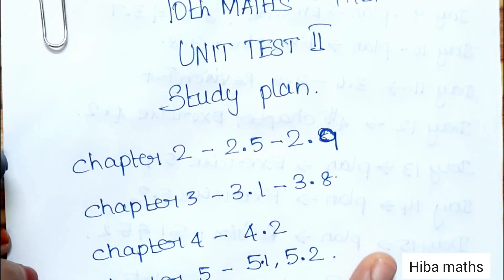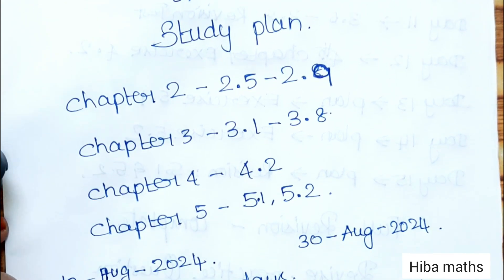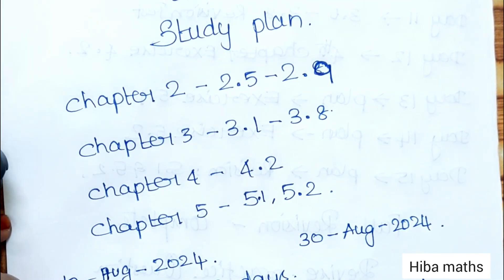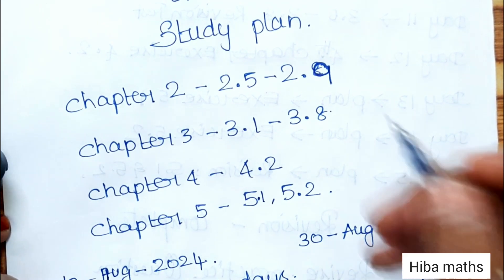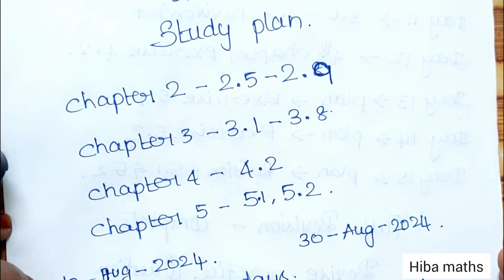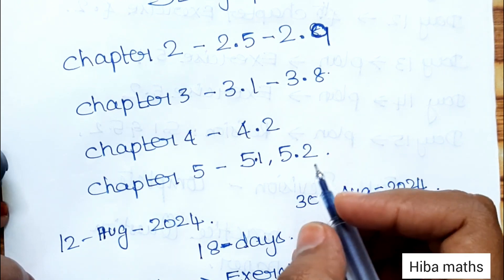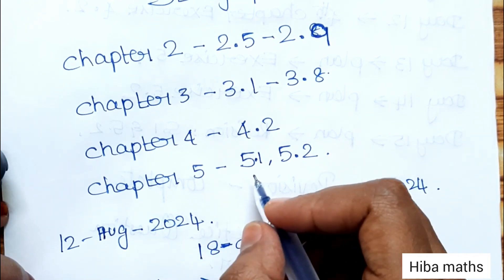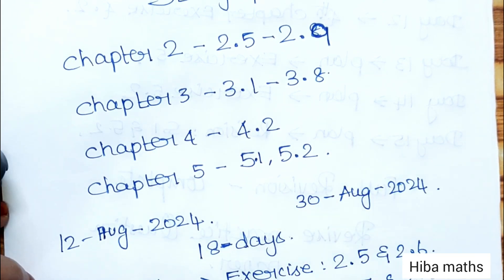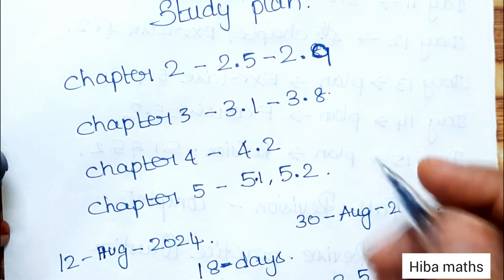The unit test timetable is published in Chennai district. We have prepared the study plan covering chapter 2: exercises 2.5 and 2.9; chapter 3: exercises 3.1 to 3.8; chapter 4: practical geometry; and chapter 5: exercises 5.1 and 5.2. These are our portions.